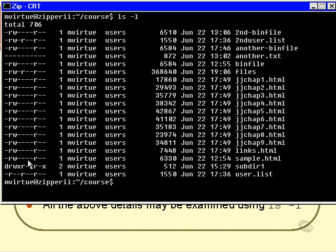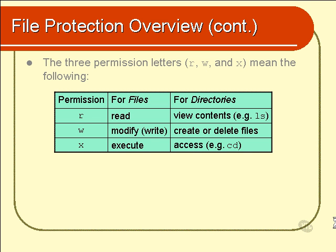Let's examine what those three letters actually mean, starting with the simplest case: files. For files it's very straightforward. R means that the person — such as the owner, the group, or everybody else — has permission to read the file, meaning they can examine the contents of the file, perhaps using cat, more, head, tail, or anything that allows them to read its contents. That could even include the copy command, cp — obviously you can't copy a file if you can't open it up and see what's inside.